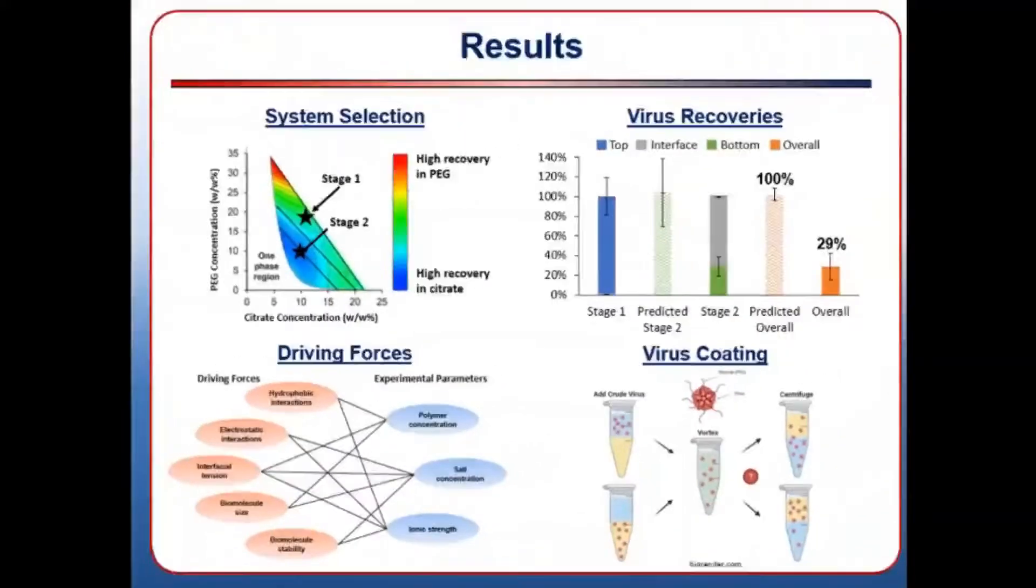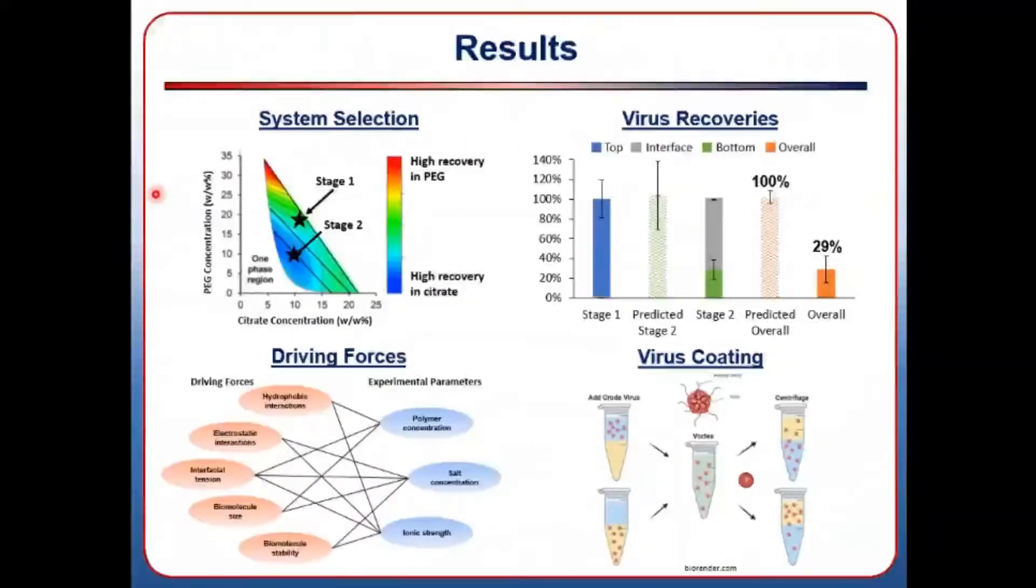This heat map on the left shows the binodal curve as a function of PEG and citrate concentrations. Compositions below this line do not form two phases and therefore cannot be used for separation, and recoveries of porcine parvovirus above it are shown as a color gradient. These recoveries are dictated by a complex network of driving forces shown below that I'd be happy to explain further in the question and answer session.